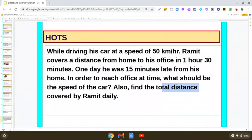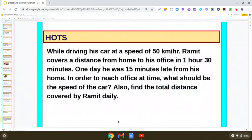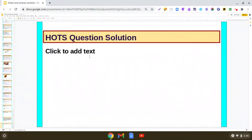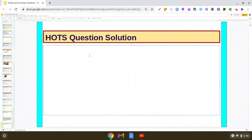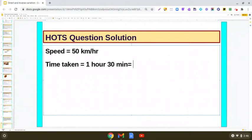Yes, you will be using the formula distance is equal to speed into time. So first thing we are going to do is we will be calculating the distance. Let me write down. It is given that he travels or he drives his car at a speed of 50 km per hour. So time taken by him is 1 hour 30 minutes. Can you convert this 1 hour 30 minutes into hours?